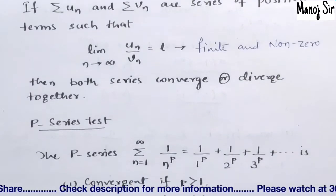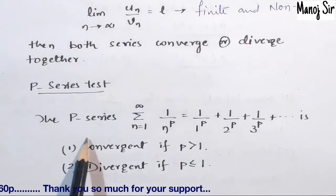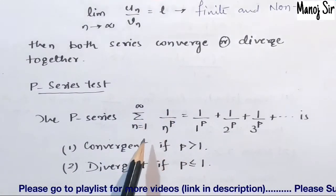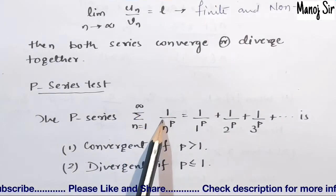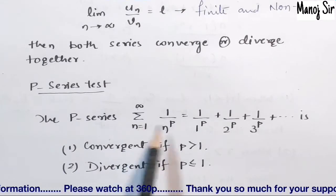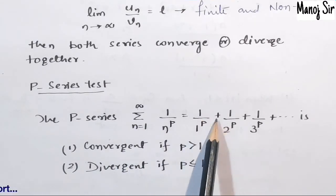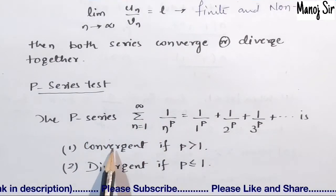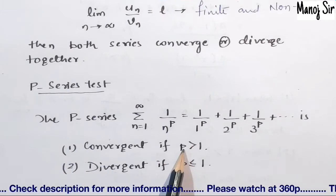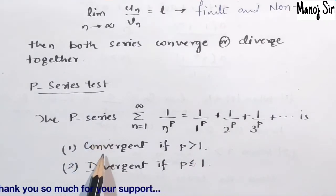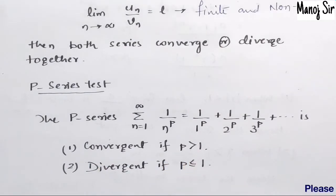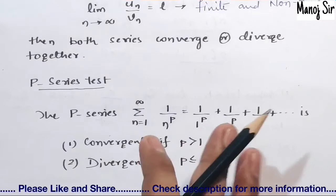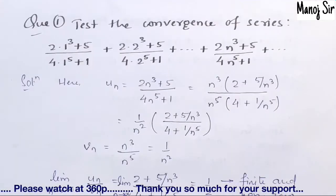Apart from the comparison test, we need to perform the p-series test. The p-series is defined as summation from n=1 to infinity of 1 upon n to the power p. Expanding this gives 1/1^p + 1/2^p + 1/3^p + ... This p-series is convergent if p is greater than 1, and divergent if p equals 1 or is less than 1.